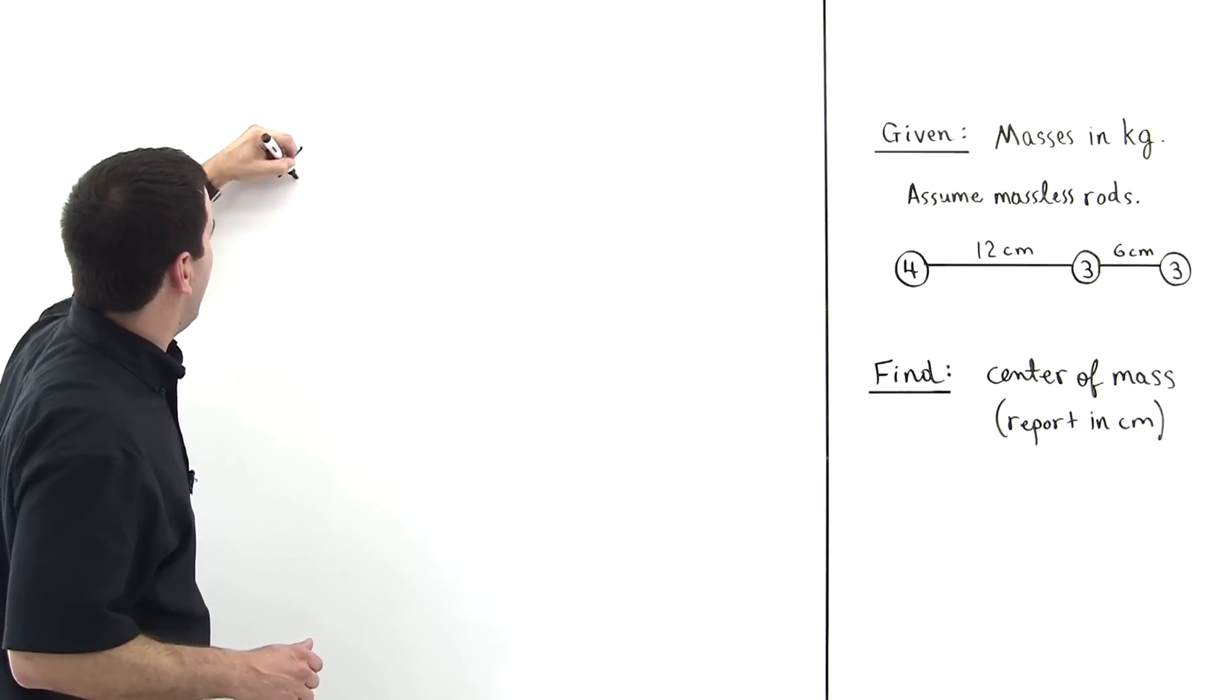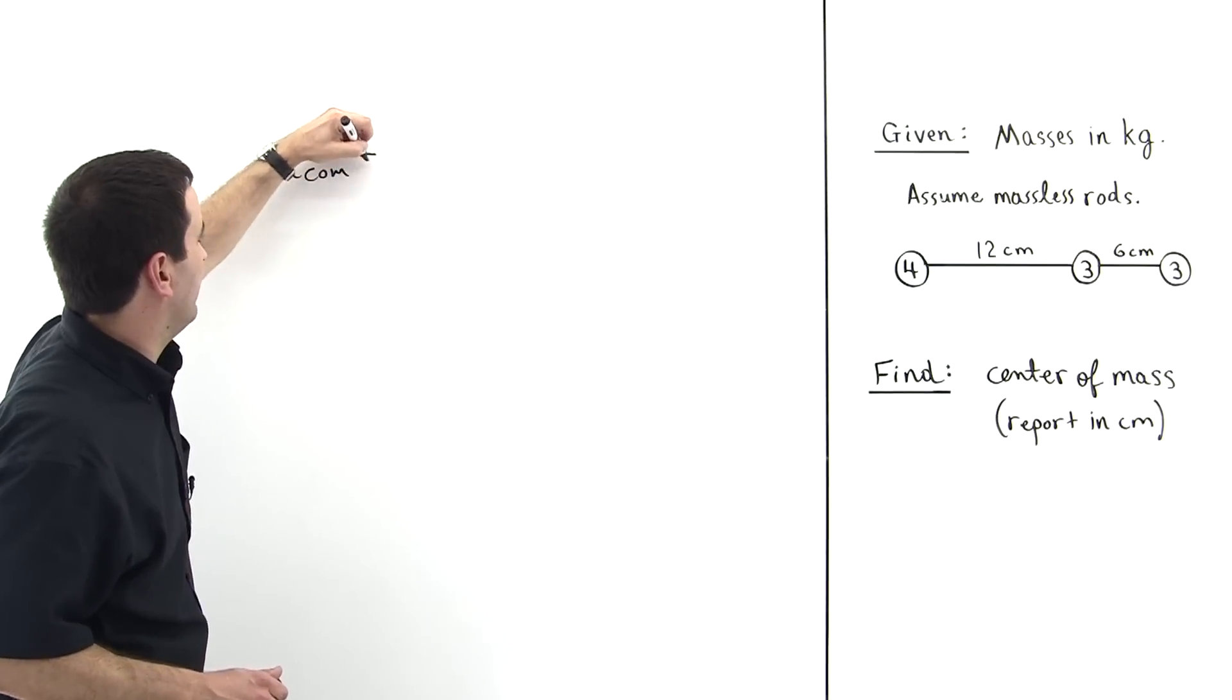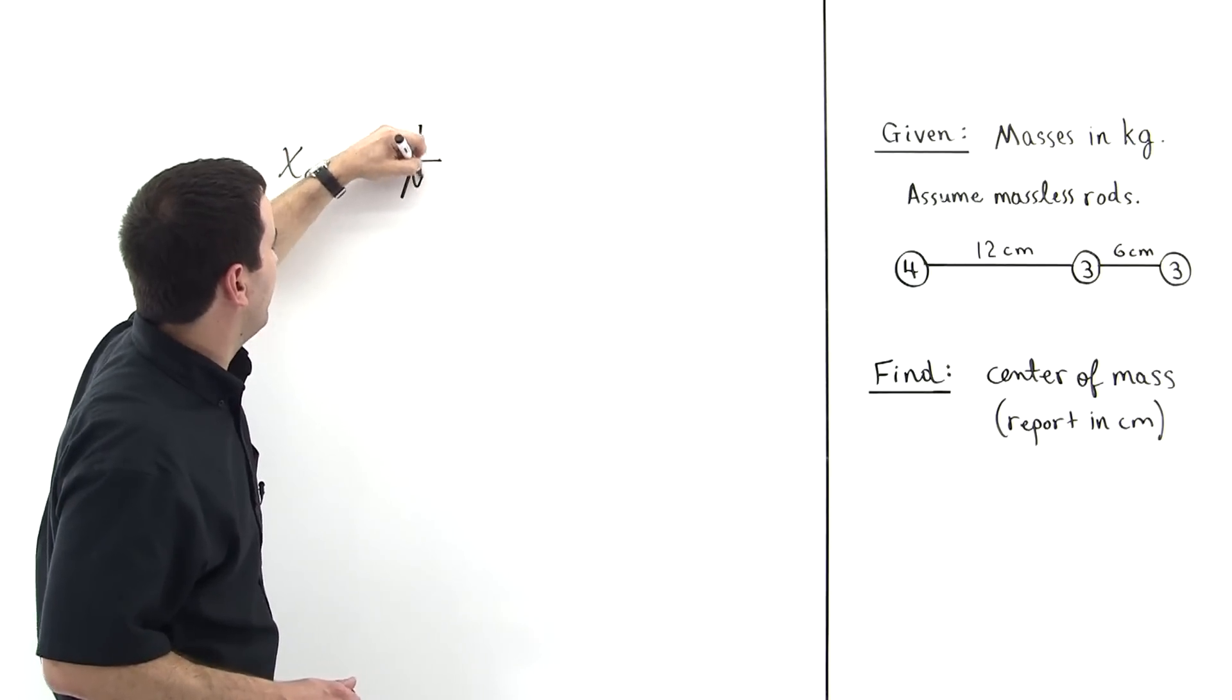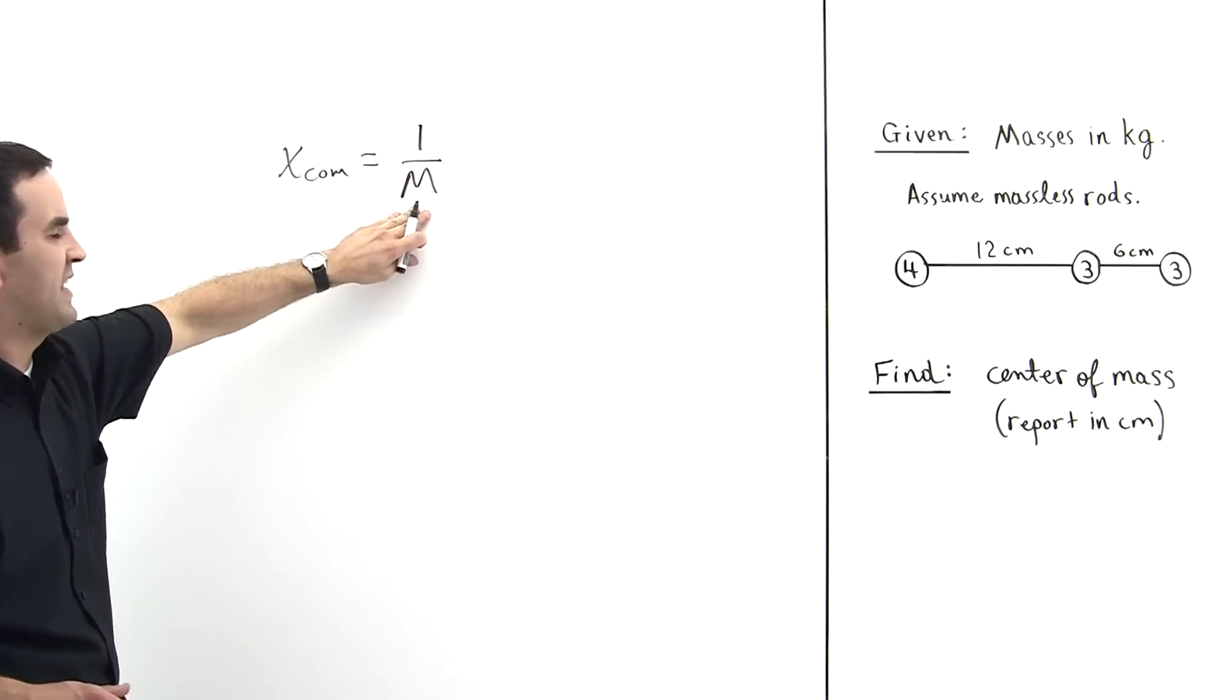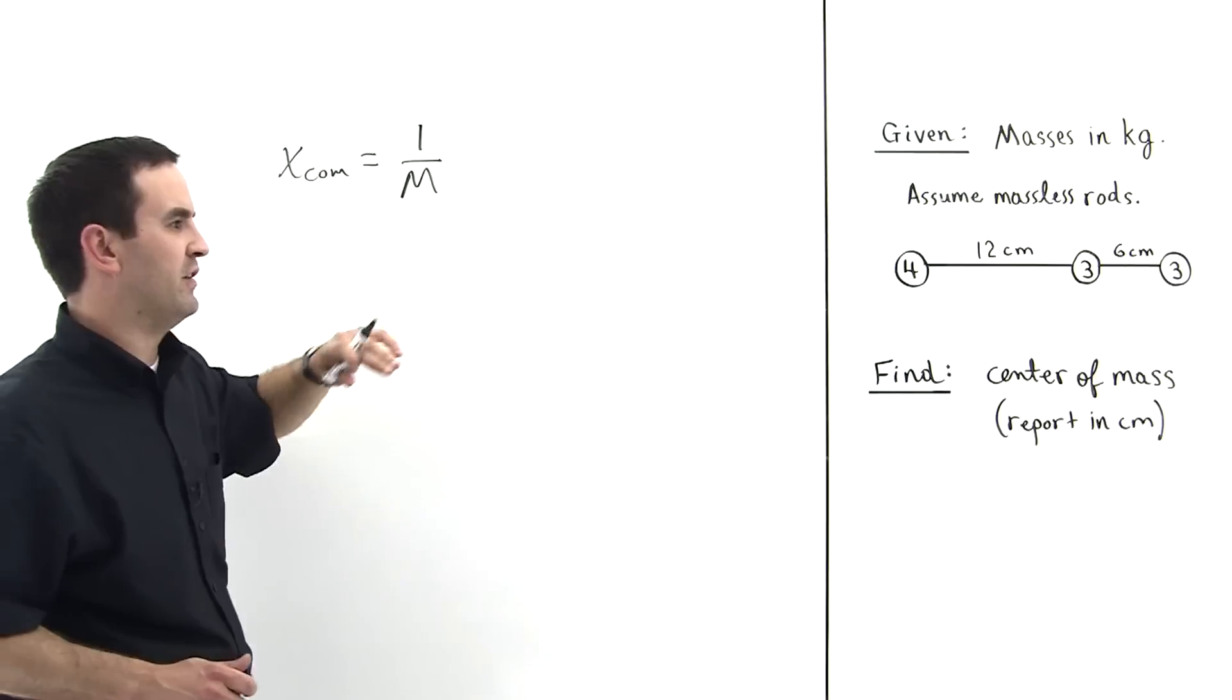So x center of mass, this is the equation that we use for this, is one divided by the mass, and this mass here is capital M because it's the sum of all of the masses,